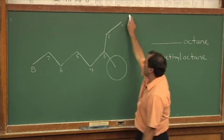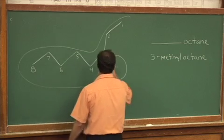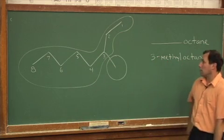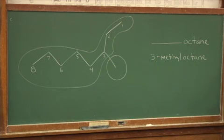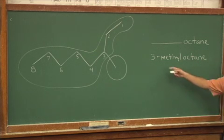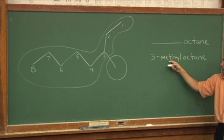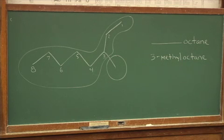So the name of this molecule is octane. And off of carbon number three, we have a methyl group. The naming here says off of carbon three is a methyl group and the whole long chain is octane. So it's 3-methyloctane, with no space in between the L and the O.